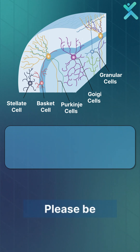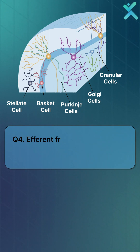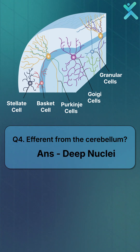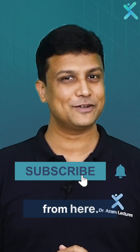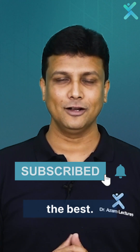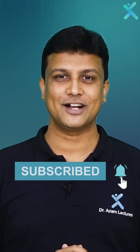Question number four: please be very careful — if they ask you about the efferent from the cerebellum, the answer should be the deep nuclei. All the best, let's achieve together.